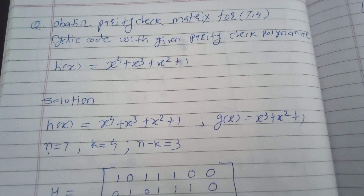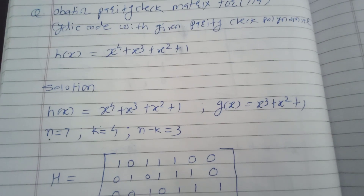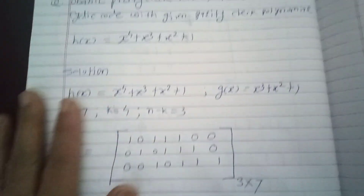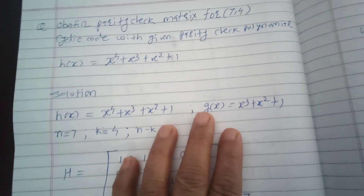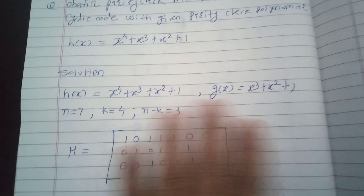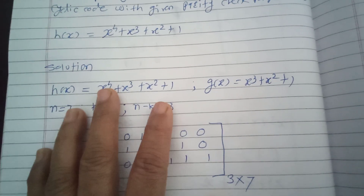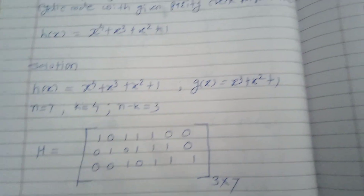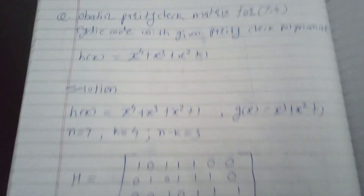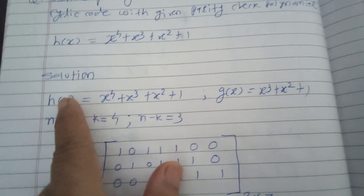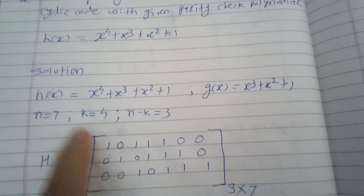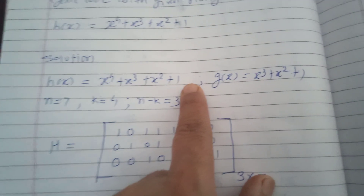In this video, we will find the parity check matrix for the generator polynomial g(x) = x³ + x² + 1. We have already seen that if g(x) = x³ + x² + 1, then the parity check polynomial is h(x) = x⁴ + x³ + x² + 1. Our concentration here is on finding the parity check matrix H from this parity check polynomial h(x).